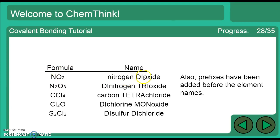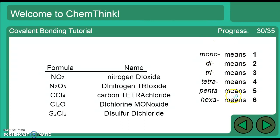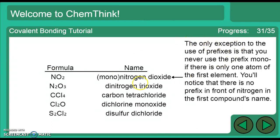The Greek prefixes: mono = 1, di = 2, tri = 3, tetra = 4, penta = 5, hexa = 6, hepta = 7, octa = 8, nona = 9, deca = 10. For example, nitrogen bonded with two oxygens is nitrogen dioxide — 'di' meaning two. With one oxygen it would be monoxide. You need to know all of these up to ten; they will not be provided.